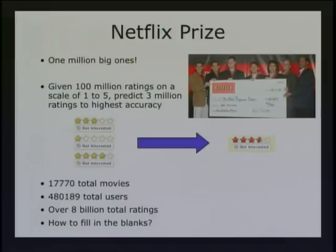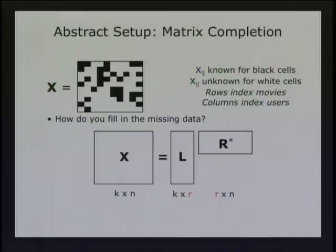We have this giant data matrix with a total of eight billion entries, and we're just trying to fill in those missing blanks. A very popular abstraction for how we might fill in the blanks is to assume that there are some low-rank factors that give rise to most of the information. That is to say that this data matrix of all the ratings of all the users is low rank, which means there are some eigen-users — people who like romance movies, or people who like Arnold Schwarzenegger — and those eigen-users will completely determine everybody else's ratings.